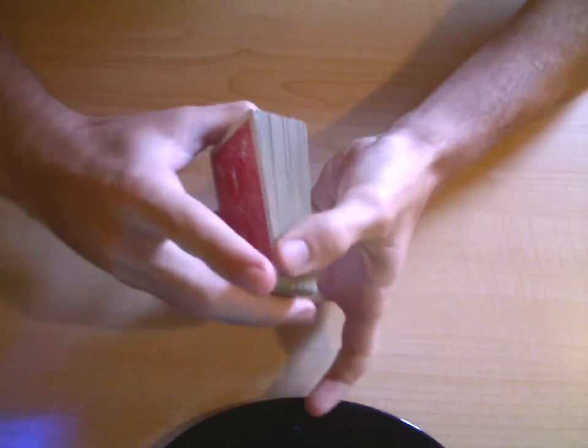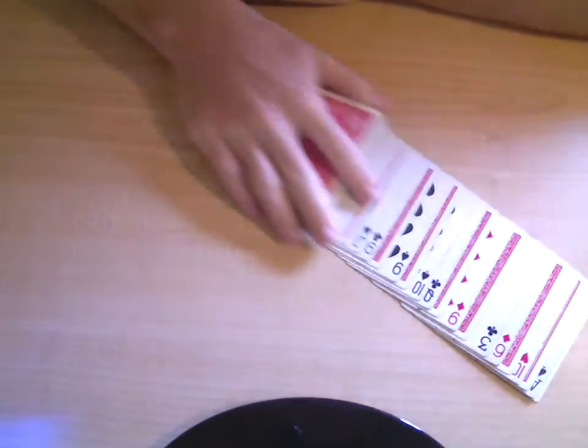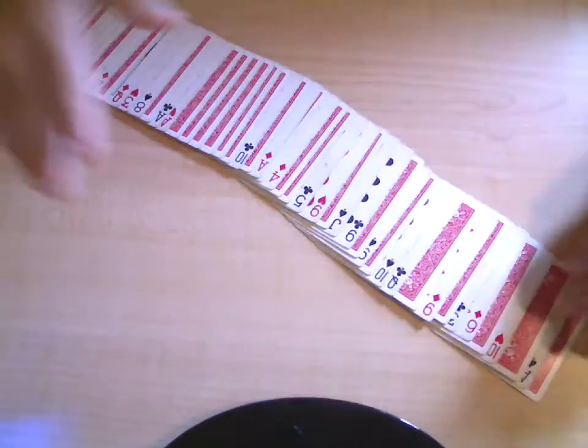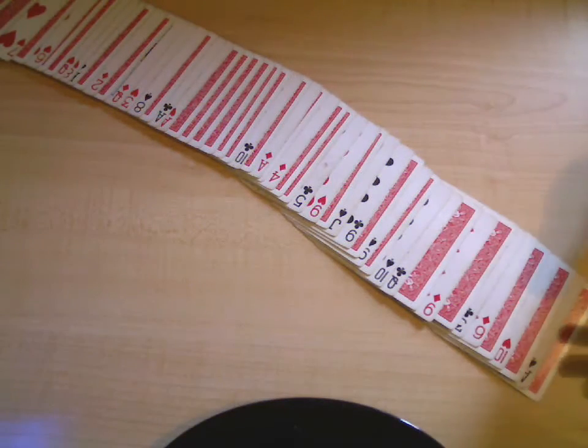So now it's completely mixed up. See? It's just all face up, face down. It's so hard to find your card anywhere. I've got no clue.